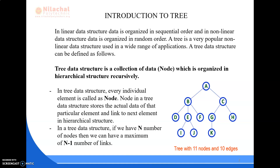A tree data structure is a collection of data, also called nodes, which are organized in a hierarchical structure recursively. Here you can see one structure of a tree in which all the nodes or data elements are structured hierarchically — there is a top element, under which it is divided into two elements, and further subdivided into three elements. In a tree, every individual element is called a node. A node stores the actual data and the link to the next element in the hierarchical structure.